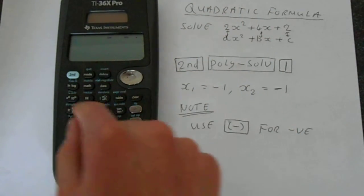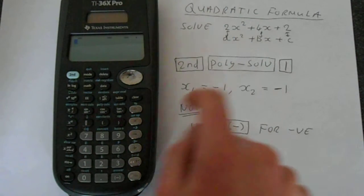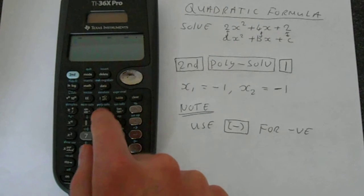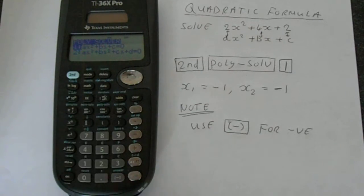So we want to get into the right mode. If we go second function and then we've got this polysolve which is down on the cos button, and then this is the form that we've got, ax squared plus bx plus c. So if we press 1 or enter we get into that.